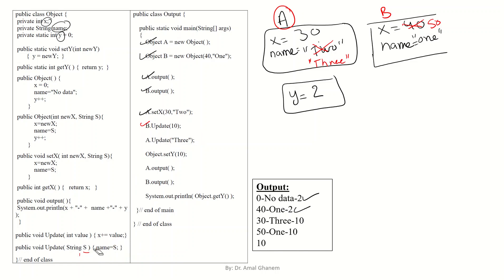We then have Object.setY(10). Remember that Object is the class name, and because setY is a static method, we can call it using the class name. We send 10 to setY, which saves 10 into y. So y is now changed to 10 for all objects.